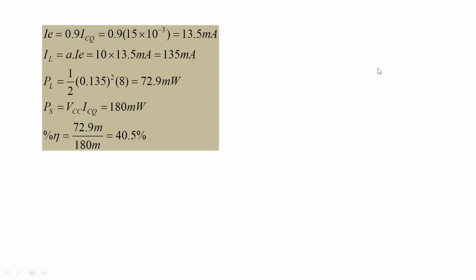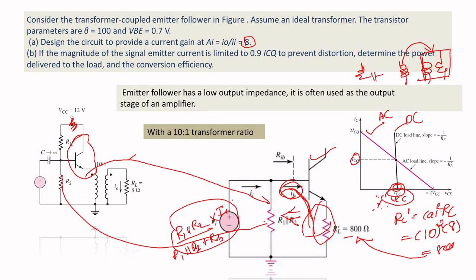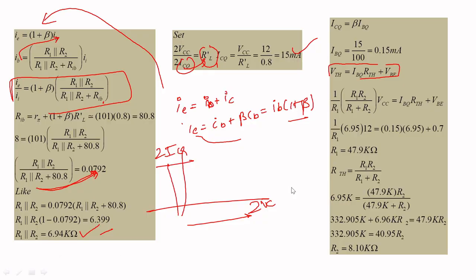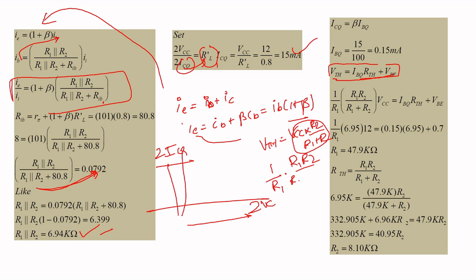To find R1 and R2, start with IBQ = ICQ / β = 15 / 100 = 0.15 milliamps. Applying KVL in the input loop: V_th = IBQ × R_th + VBE. We know V_th = VCC × R2 / (R1 + R2), and R_th = R1 ∥ R2 = 6.94 kilohms.